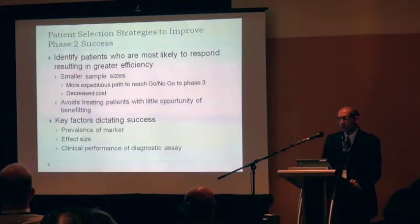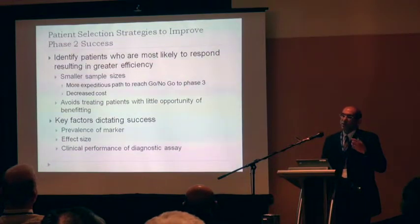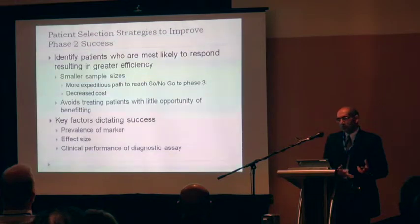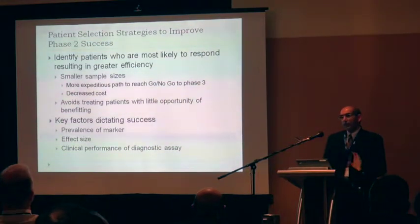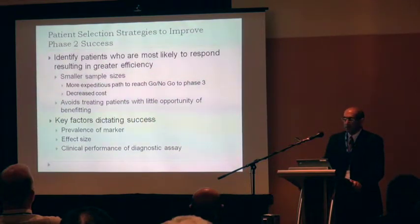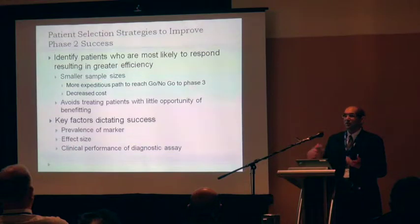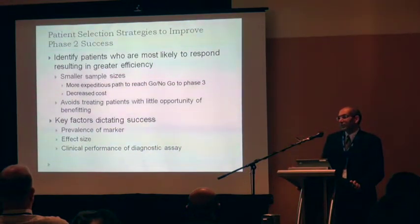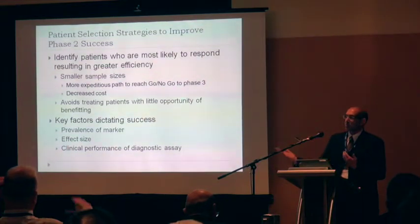Patient selection has been shown to allow smaller sample sizes under the hypothesis of a greater effect size, which leads to smaller trials and — importantly from a clinical standpoint — avoids treating many patients who have no opportunity to benefit. The three main factors determining how successful your patient selection strategy might be are: first, the prevalence of the marker — it makes a big difference whether 2% versus 80% of patients in ovarian cancer have the marker. Second, the effect size — if your response rate only improves from 20% to 25%, that's very different from moving from 20% to 80% in a selected population.